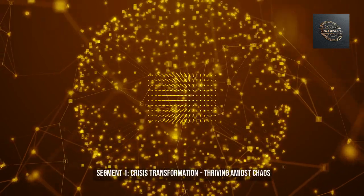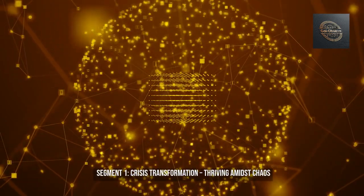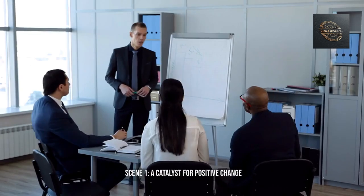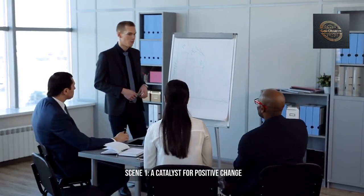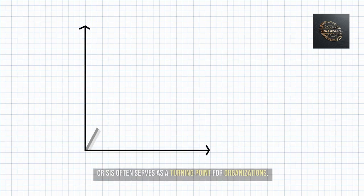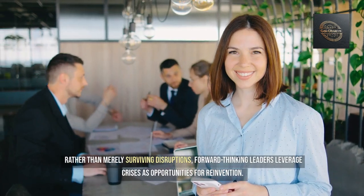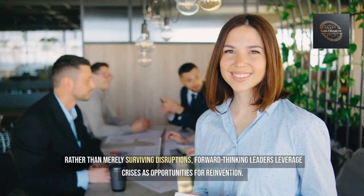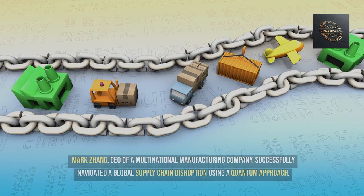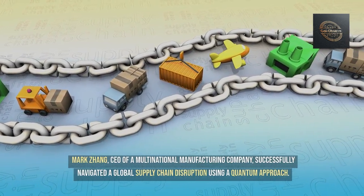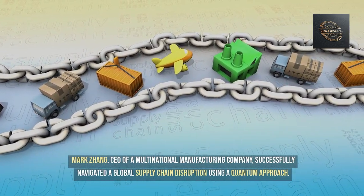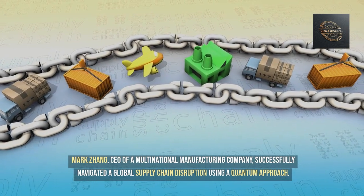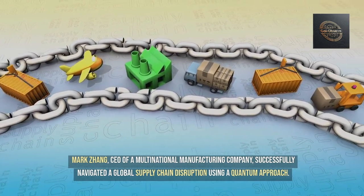Segment 1: Crisis Transformation — Thriving Amidst Chaos. Crisis often serves as a turning point for organizations. Rather than merely surviving disruptions, forward-thinking leaders leverage crises as opportunities for reinvention. Mark Zhang, CEO of a multinational manufacturing company, successfully navigated a global supply chain disruption using a quantum approach.